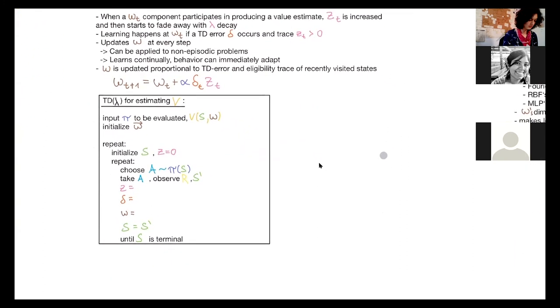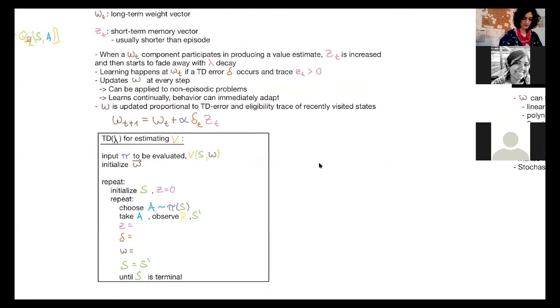Let's look at this in code, something like that. So this one is for estimating v. Of course, this can also be applied to the q value in the same way.